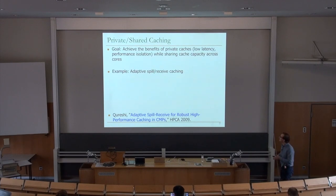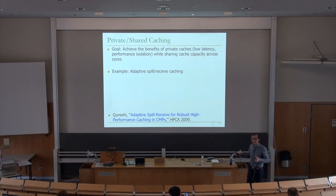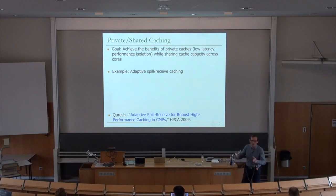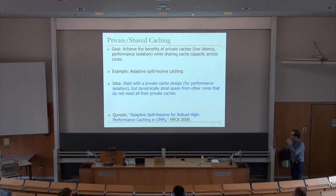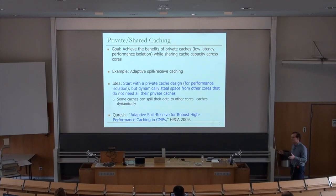We'd like to achieve the benefits of private caches — low latency, tight coupling with the core, performance isolation — while sharing cache capacity across cores. The idea is adaptive spill-receive caching, sometimes called cooperative caching. You start with a private cache design for performance isolation and low latency, but dynamically steal space from other cores that don't need all of their private cache.